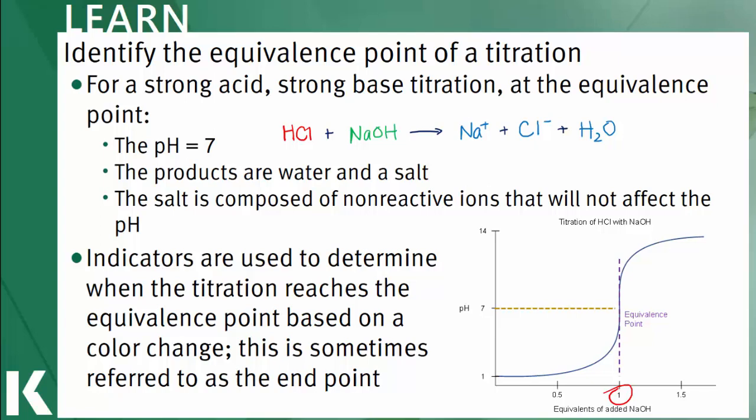In many acid-base titrations, a small amount of a color-changing compound called an indicator is added to the titration. Indicators are carefully chosen for the pH range in which they change color and will be a visual indicator when the equivalence point is reached.